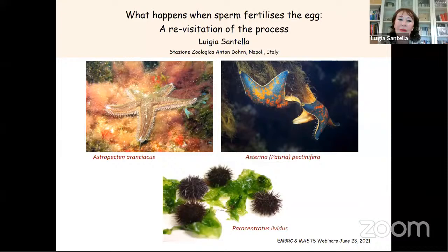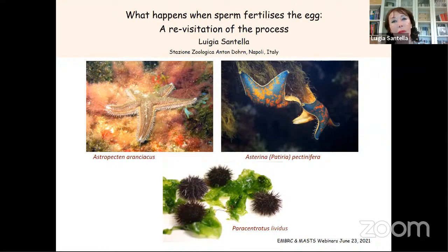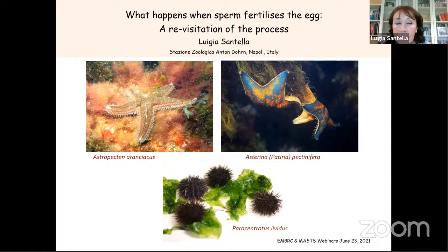I want to thank the organizers for giving me the chance to talk about our results. I'm going to talk about what happens when sperm fertilize starfish and sea urchin eggs. These animals have been extremely useful because most of our knowledge on fertilization and development derives from classical studies performed on these animals. The reason is because they reproduce by external fertilization.